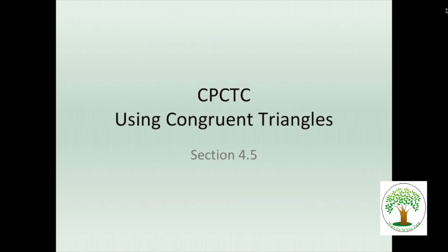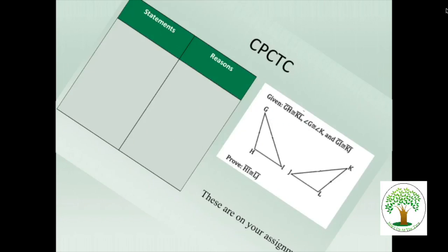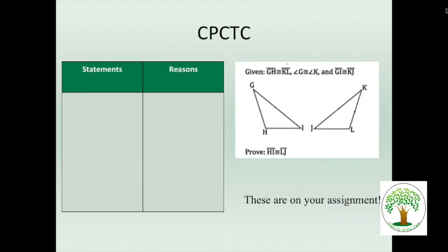Right up here we have an abbreviation CPCTC. Now we're going to be going one step further. We are going to be doing proofs to find an angle congruent, and then once an angle is congruent, we're going to use that congruent triangle to prove other things. So we're going to be using congruent triangles to go further and we're going to talk about what the CPCTC stands for. We're going to do that by doing a proof.